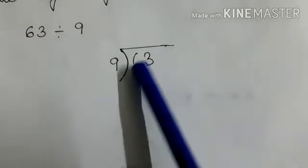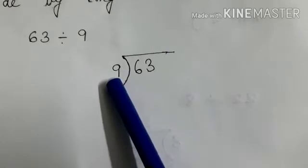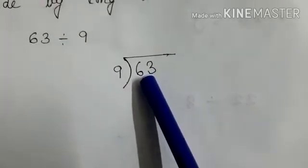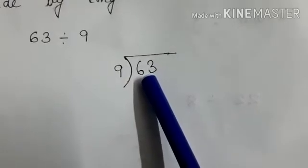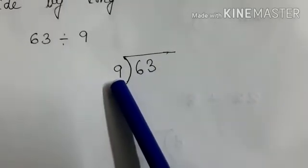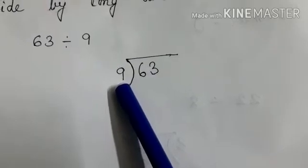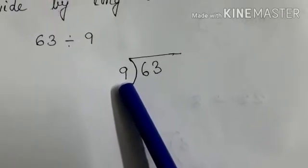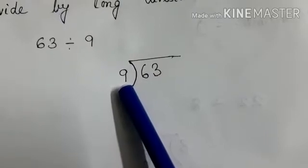Now see students I have placed my divisor and dividend in the long division method. And so now what we have to do? We have to recall the table of 9. So let's recall the table of 9 in our mind. Yes children recall the table in your mind.